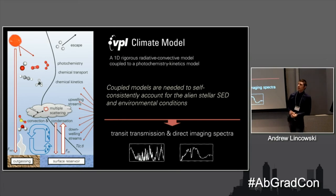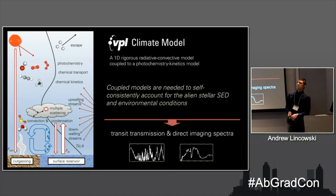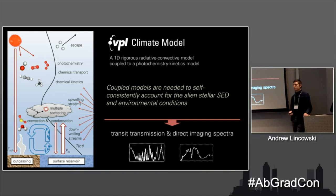The model I use is a 1D climate model — a very rigorous line-by-line radiative-convective model with multi-scattering. You can model Earth and all the solar system planets with it. This is coupled to a photochemical kinetics model, because M-dwarfs have really intense UV, and to understand what happens to an atmosphere around an M-dwarf you have to understand what the UV is doing to the chemical species. Once I've converged on a photochemical and climate equilibrium state, the same radiative transfer model produces very high-resolution spectra that can then be degraded to simulate what James Webb might see.